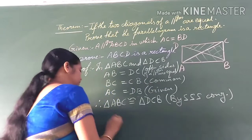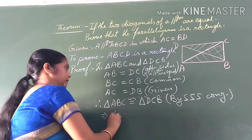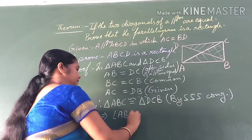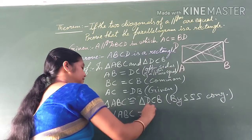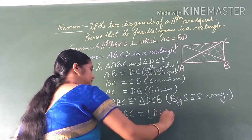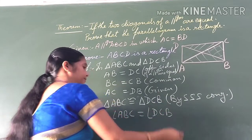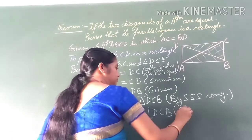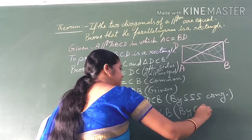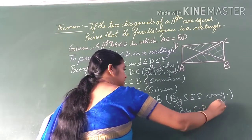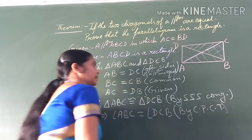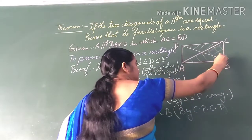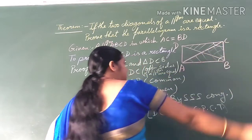This implies angle ABC is equal to angle BCD by CPCT.